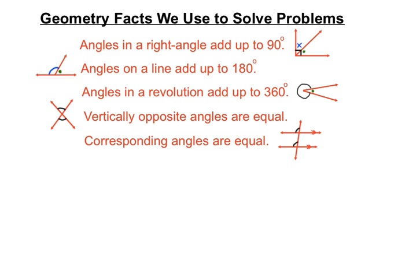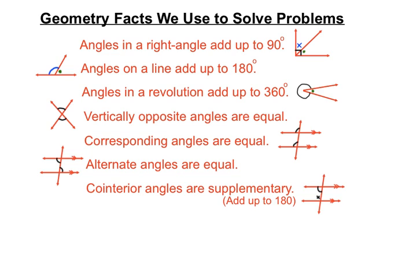When we've got parallel lines, we've got corresponding angles are equal. In parallel lines, alternate angles are equal. And if the lines are parallel we've also got an arrangement called co-interior, and that pair will add up to 180 degrees — we say that co-interior angles are supplementary. Those last three only work in parallel lines.